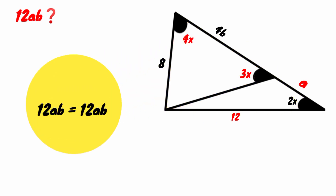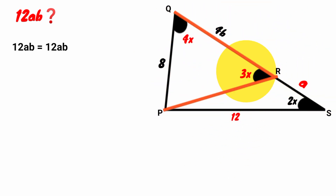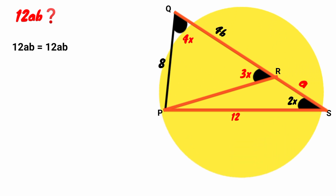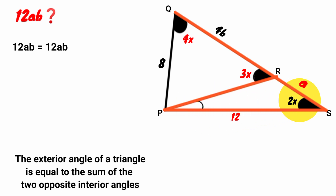It is very simple. We start by labeling the points P, Q, R and S. Now let's look at angle PRQ — it is an exterior angle of triangle PRS. The exterior angle rule states that the exterior angle of a triangle is equal to the sum of the two opposite interior angles. We have the size of one to be 2x and the exterior angle is 3x, so this angle must be 3x minus 2x, which is x.